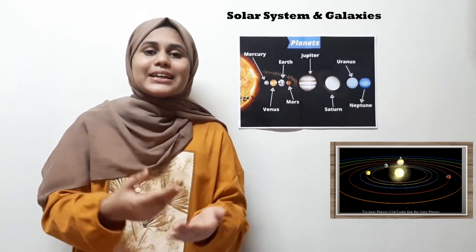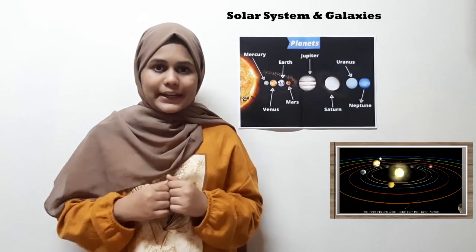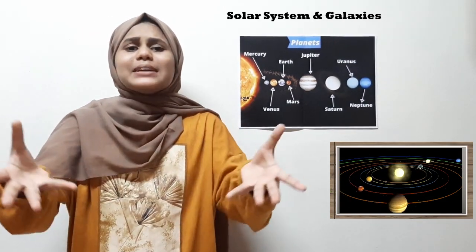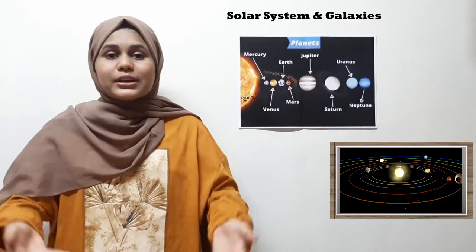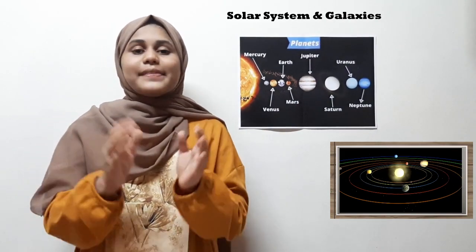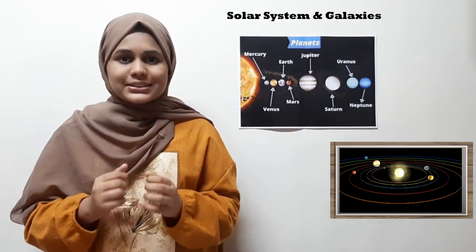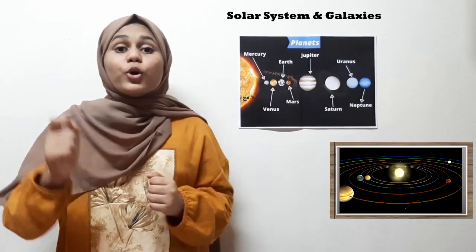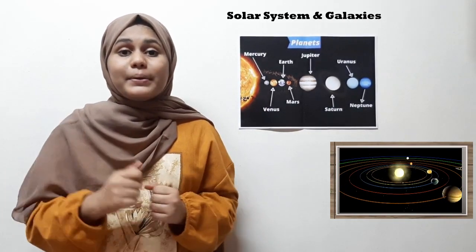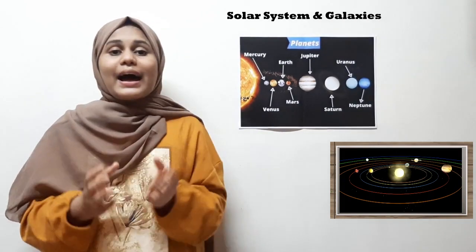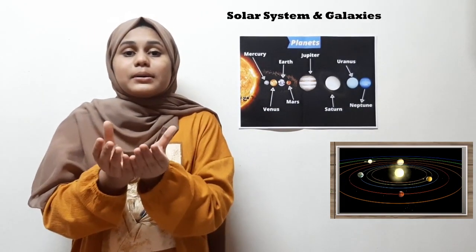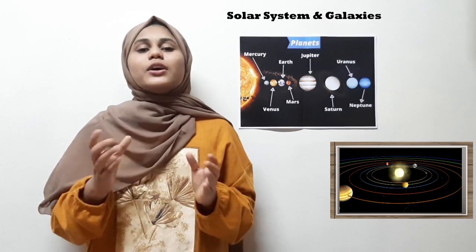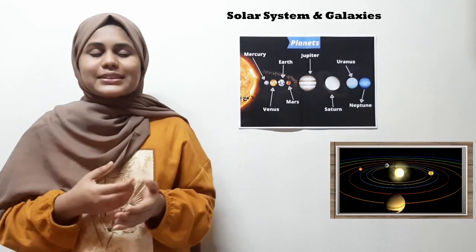So basically there is the Sun in the center and many objects that surround or revolve around it, and that is what is called a solar system. Our solar system was formed 4.5 billion years ago from a ball of dust and gas.